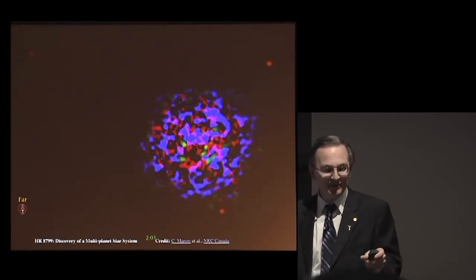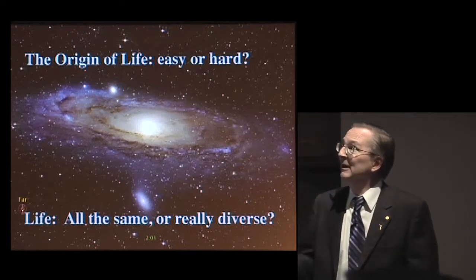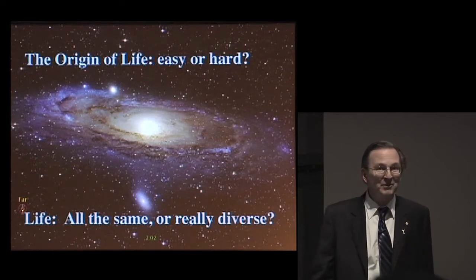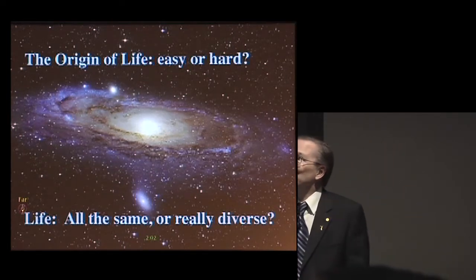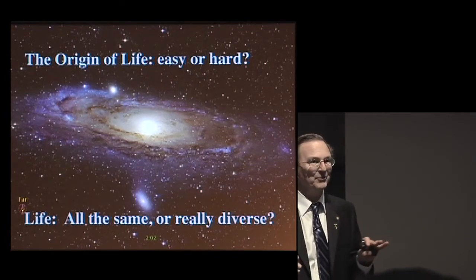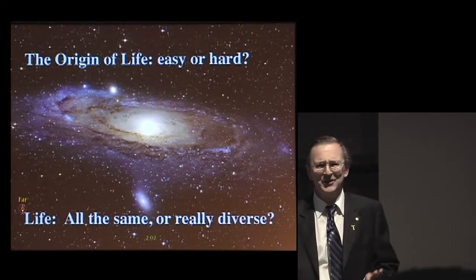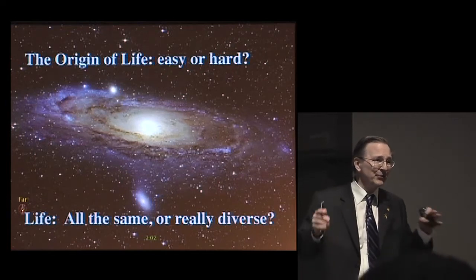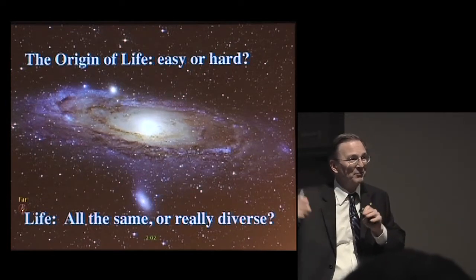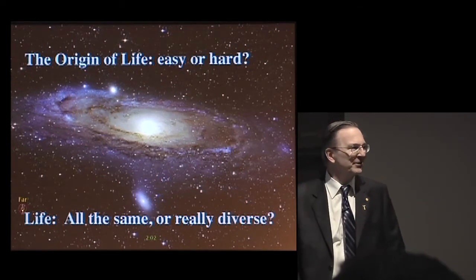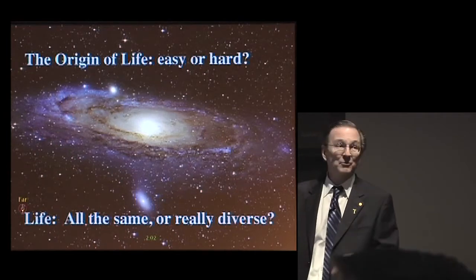We all want to know: is it possible that there might be life on those other planets? If you think about a typical galaxy with 100 billion stars, there could easily be a billion Earth-like planets out there. So there are two possibilities. If it's easy for life to get started, most of those planets probably have been colonized by at least simple microbial life. On the other hand, if it's really hard to get life started, if there's some bottleneck, some particular point in that process that's really tough, it could be that we're the only planet in our galaxy that has life — or maybe even in the whole universe.